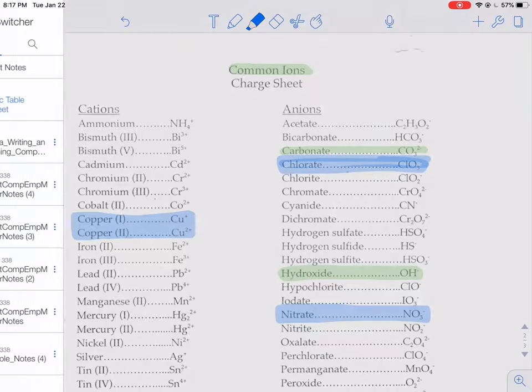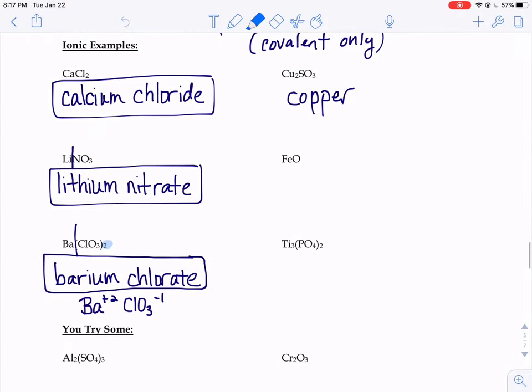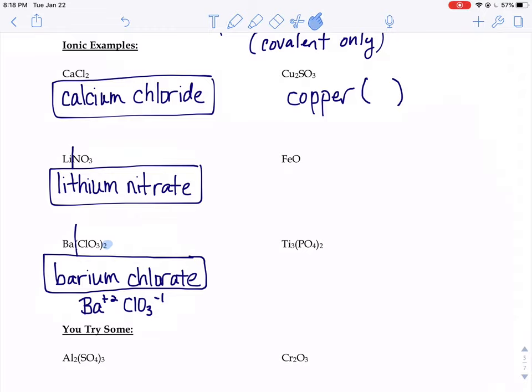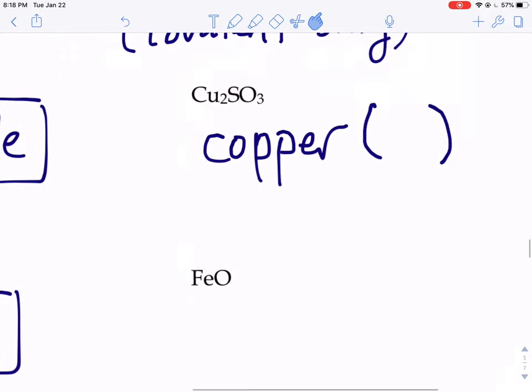We need extra information. So we're going to need to put a Roman numeral in this problem. So it's going to be copper Roman numeral something. I just don't know what the something is yet. Well, the way you're going to figure out what that something is, is by looking at the non-metal portion of your compound. So let's focus on that part, that SO3.